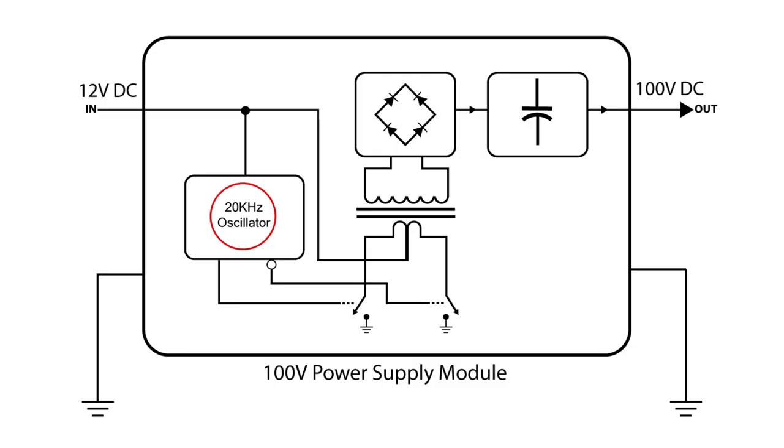A 20 kilohertz oscillator drives a pair of switches. These switches convert the 12 volt DC input into AC. The transformer then boosts this AC voltage up to 100 volts AC. The output of the transformer feeds a rectifier bridge and a filter capacitor which produces the final raw 100 volt unregulated output.